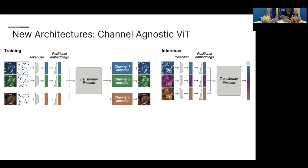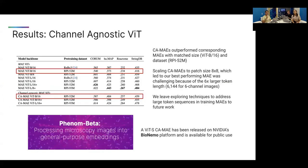One of the other main contributions of our work was introducing a channel-agnostic masked autoencoder, which has particular benefits in microscopy where different experimental protocols have different channel configurations and numbers. On the left we see how the training of this channel-agnostic model works: we treat each channel as a separate modality, mask each channel separately, and then use a shared tokenizer and positional embedder to pass those embeddings to a transformer encoder. We then use separate decoders for each channel to decode that masked image specific to that channel. During inference, whatever the number or order of channels, we can use whatever data is available through the tokenizer, add the positional embeddings, and use the trained transformer encoder to encode those images and get the final output embedding.